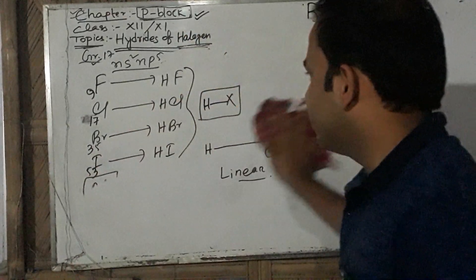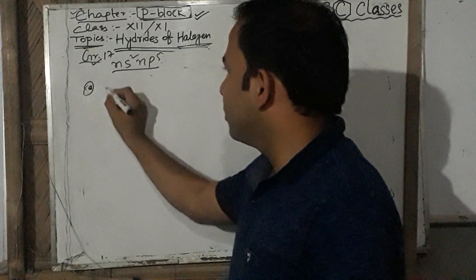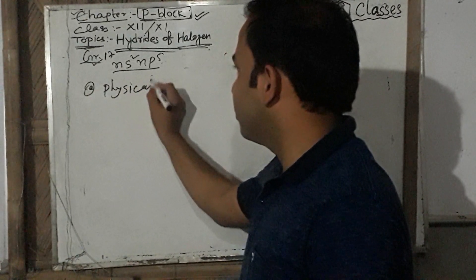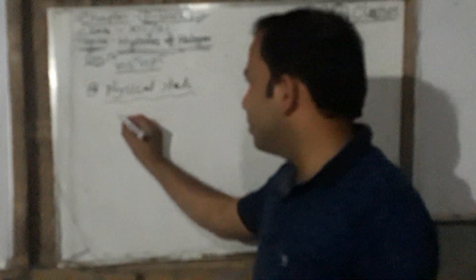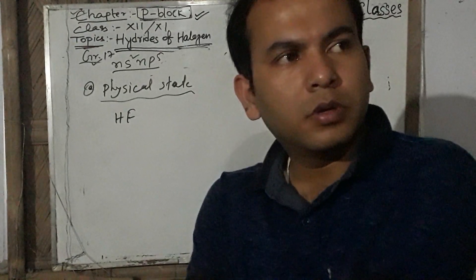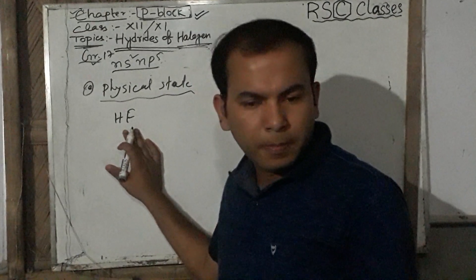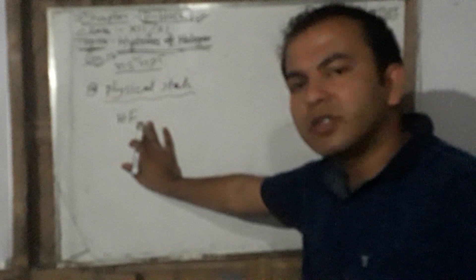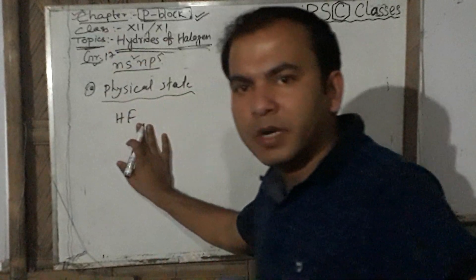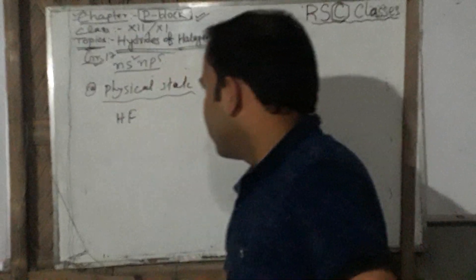Now we discuss the properties of halogen hydrides. The first property is physical state. Hydrofluoric acid (HF) is a very corrosive liquid. It cannot be stored in glass vessels because it reacts with silicon dioxide (glass). That is why it is stored in wax-coated containers.